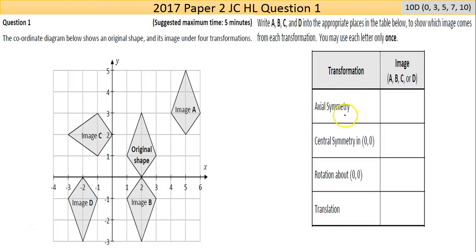Okay so first there's axial symmetry. Now that's symmetry of the shape through an axis, and in this case the x-axis, so that looks like image B. B there.